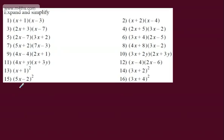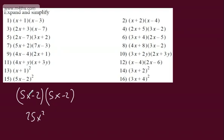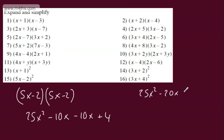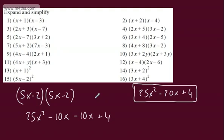One more: 5x minus 2 all squared means 5x minus 2 multiplied by 5x minus 2. 5x multiplied by 5x is 25x squared. 5x multiplied by minus 2 is minus 10x. Again 5x multiplied by minus 2 gives us minus 10x. And negative 2 multiplied by negative 2 gives us positive 4. Tidying up: 25x squared minus 20x plus 4. That is expanded and simplified. You don't have to use the FOIL technique — there are alternatives — but it helps us keep track of what we're doing. We expand and then collect the like terms and simplify.